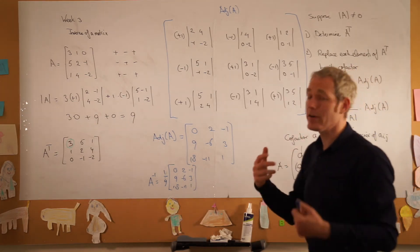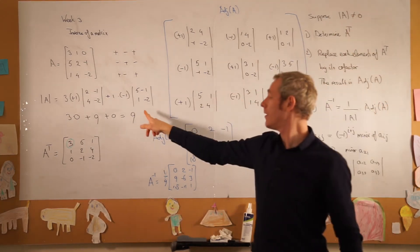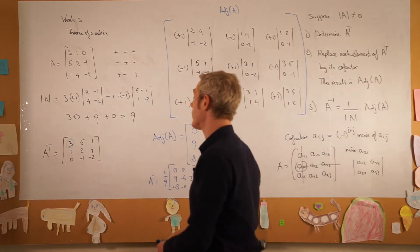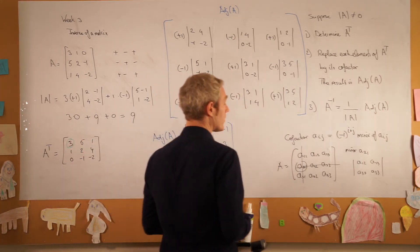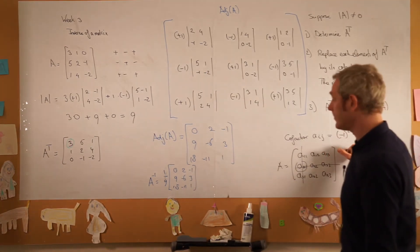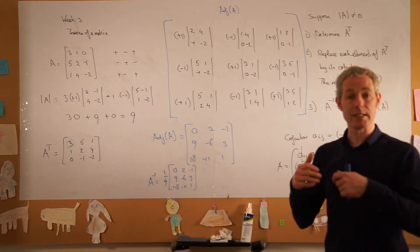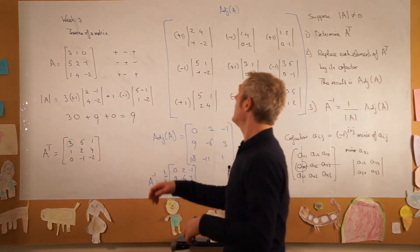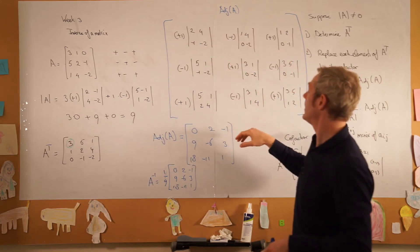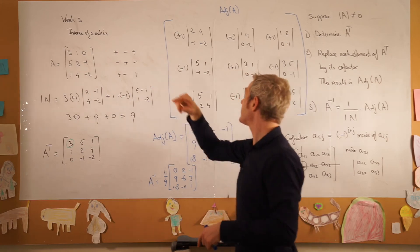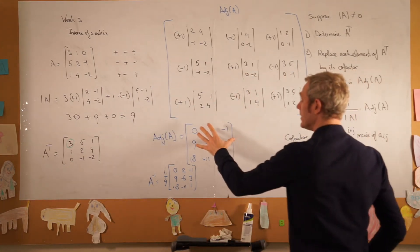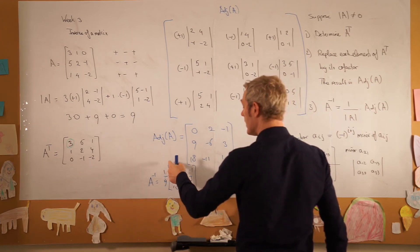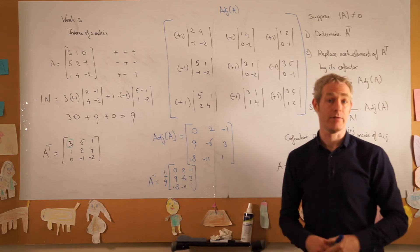To determine the inverse of a matrix: first we calculated its determinant and found it is not equal to 0, so we can calculate the inverse. Next step is to create the transpose of the matrix, and for each element we determine its cofactor. The cofactor is minus 1 or plus 1 times its minor, and the minor is a 2 by 2 determinant of the elements remaining after removing the row and column of that element. That gives us 9 two-by-2 determinants, yielding the adjoined matrix, and from the adjoined matrix we calculate the inverse by multiplying by 1 over the determinant.